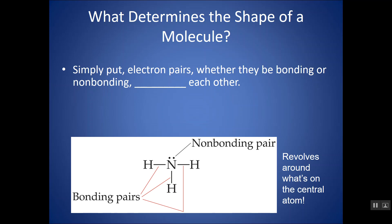We're going to look at how to determine the shape of a molecule and something called molecular geometry, which describes the shape. A molecule is composed of covalent bonds, and we can show those bonds with a single line to represent a pair of shared electrons. You might see a double bond or triple bond, but each line represents a pair of shared electrons. These molecules are mostly going to consist of non-metals, so that they share electrons, and we can show covalent bonds. You might see a couple of metalloids thrown in there too.